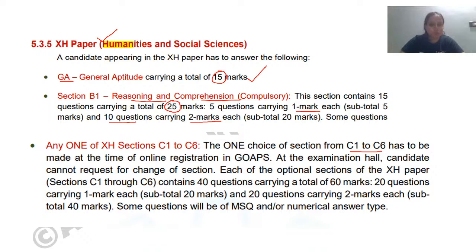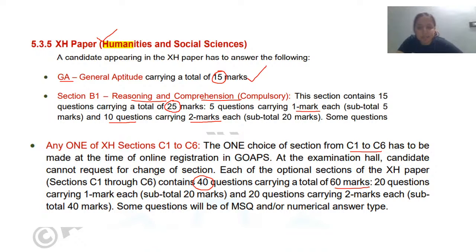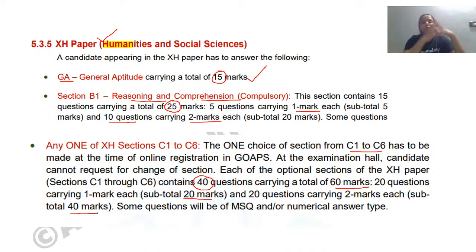In the subject section there will not be 60 questions — there will be 40 questions carrying a total of 60 marks. The same rule applies: the first 20 questions will be one mark each, and the remaining 20 questions will be two marks each, making it 40 marks. Combined, that gives a total of 60 marks for the subject section.